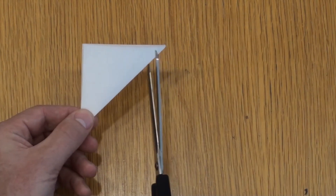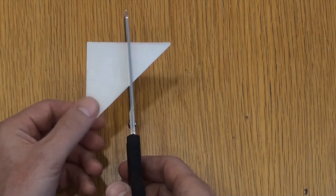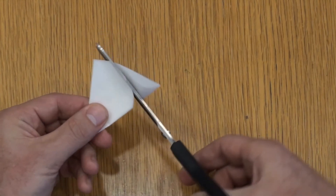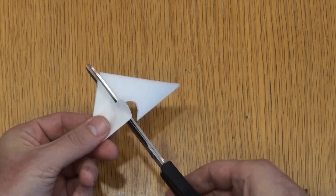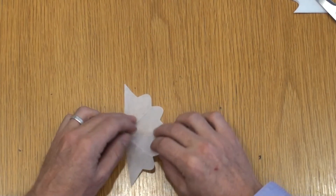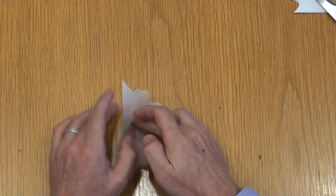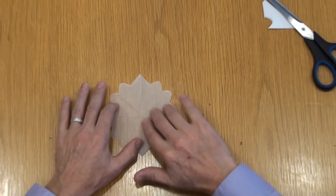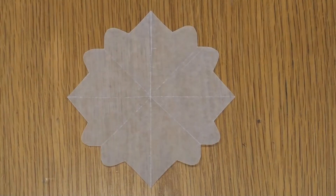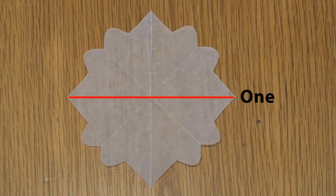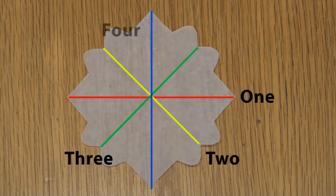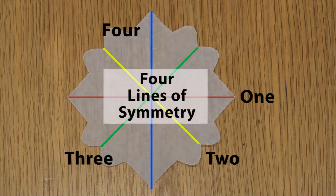Holding the common corner in my left hand, I cut out my design on the fold line to the right of the common corner. When I remove the extra paper and unfold the paper, a new design appears. This new design has four lines of symmetry.